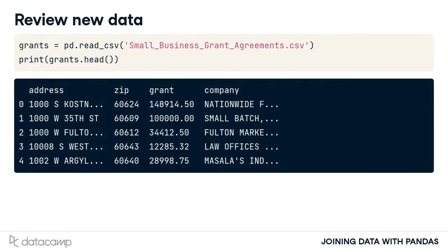Now we also have a table of businesses that have received small business grant money from Chicago. The grants are funded by taxpayer money. Therefore, it will be helpful to analyze how much grant money each business receives and in what ward that business is located. We then could determine if one ward's businesses receive a disproportionately large amount of grant money.